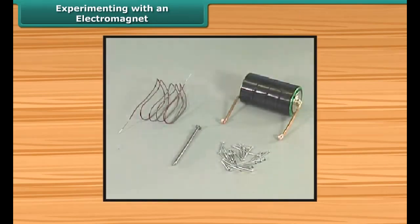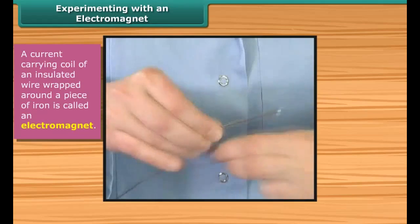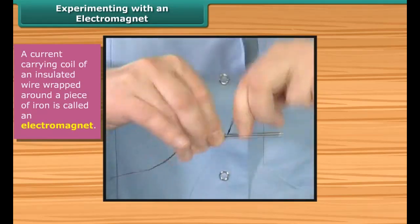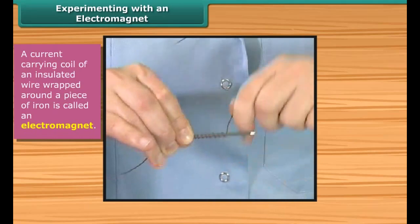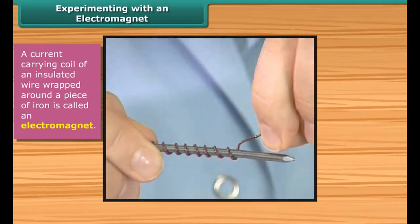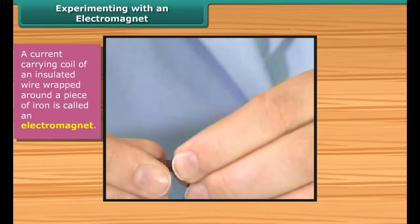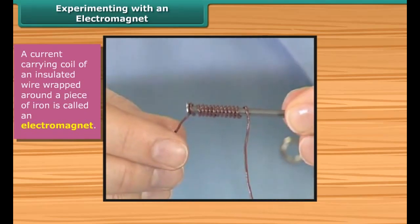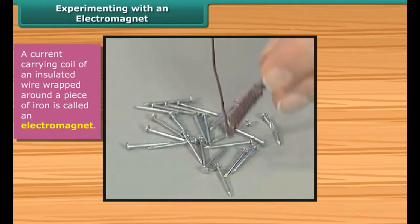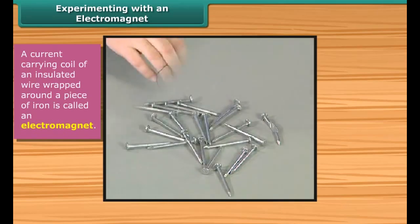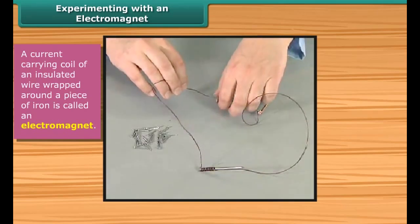Let's perform a simple activity to show the magnetic effect of current. Take a long piece of flexible wire and wrap it around an iron nail — this forms an electromagnet. Connect the free ends of the wire to the terminals of a cell through a switch. Place some pins near the end of the nail and switch on the current. We see that the pins cling to the tip of the nail.